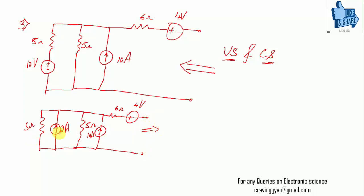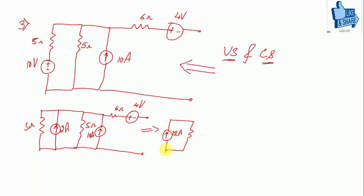Since the 2 A and 10 A currents are in the same direction, the combined current is 2 + 10 = 12 amperes. The two 5 Ω resistors in parallel give 5×5/(5+5) = 25/10 = 2.5 Ω. When two equal resistors are in parallel, the equivalent resistance is half the individual value. We then connect the remaining network: 6 Ω and 4 V in series.